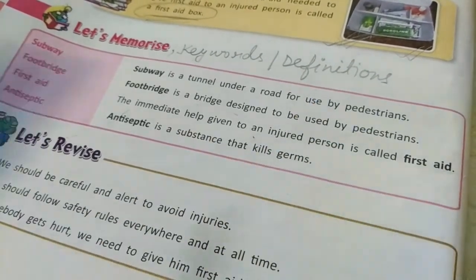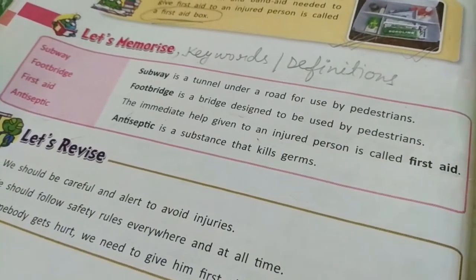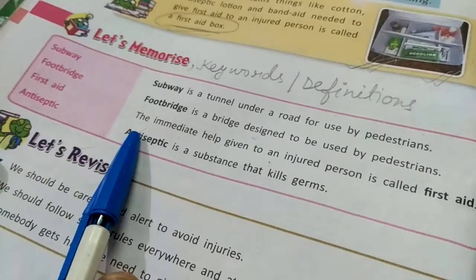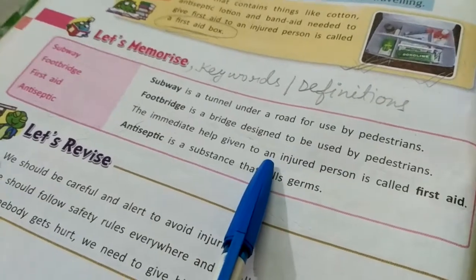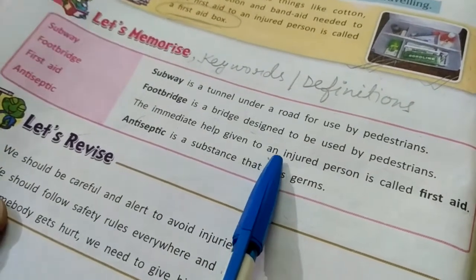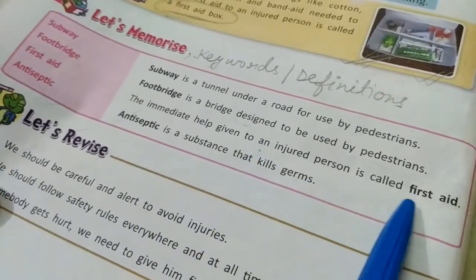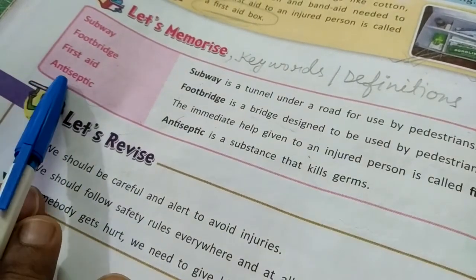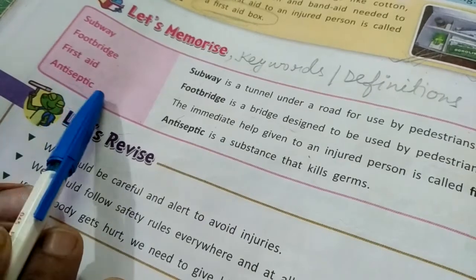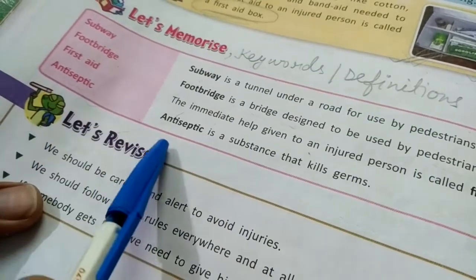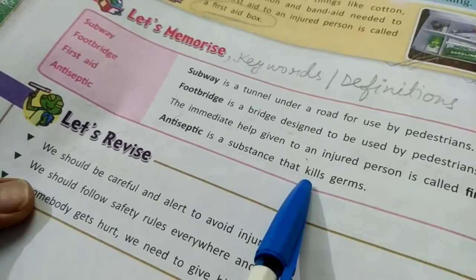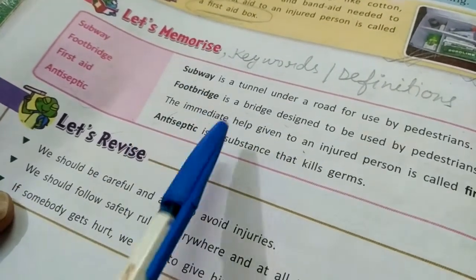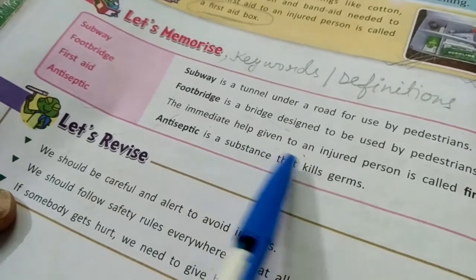Next is first aid. The immediate help given to an injured person is called first aid. Immediate means at once, quickly — the quick help we give to an injured person, meaning a person who has got hurt. Next is antiseptic.